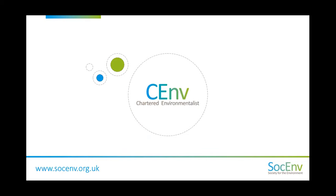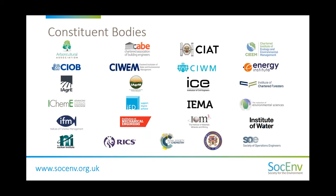You're watching a Society for the Environment webinar. We hold a Royal Charter awarded in 2004 and are custodians of two professional registrations: the Chartered Environmentalist (CEnv) and the Registered Environmental Technician (REnvTech). We operate as an umbrella organisation currently made up of 25 professional bodies, all holding a licence to award the CEnv registration, with three also offering the REnvTech. Together these registrations total over 7,400 globally.